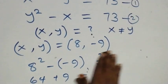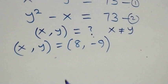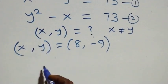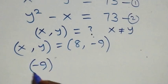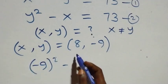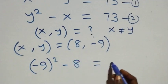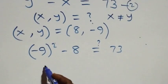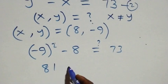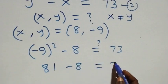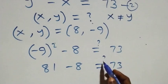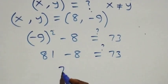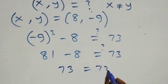Substituting into equation two: y² - x = (-9)² - 8 = 81 - 8 = 73, which equals 73. Left-hand side equals right-hand side. Hence these solutions satisfy both given equations.